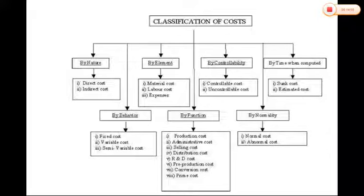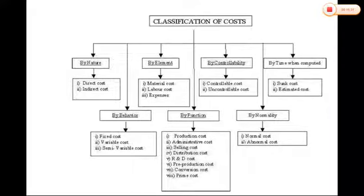The last classification is by normality. Normal cost is the cost incurred at the normal level of output — for example, manufacturing 1,000 articles at 100% capacity at the expected cost range. Abnormal cost occurs when the cost increases beyond the normal level due to unusual situations such as lockdowns, electricity failures, or worker strikes. These unexpected additional costs are called abnormal costs.